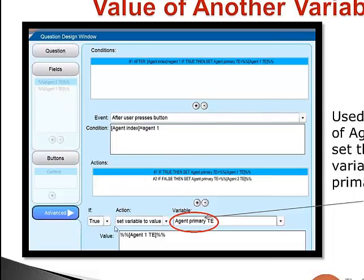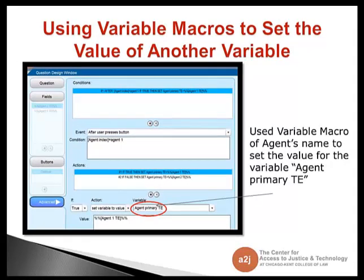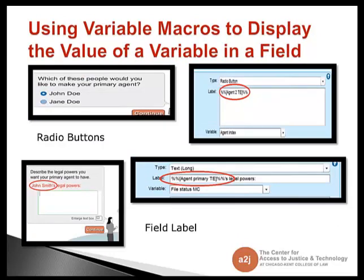I want A to J author to set the value of this new variable, agent primary TE, to agent 1's name. The format is again percent sign, percent sign, bracket, variable name, close bracket, percent sign, percent sign. If it was false and they selected agent 2, I told A to J to set the variable agent primary TE to agent 2 TE. So now I don't have to keep asking — whenever I mention a primary agent, I can just use whatever the proper selection is. It reminds the end user who they've selected as that primary agent later on.